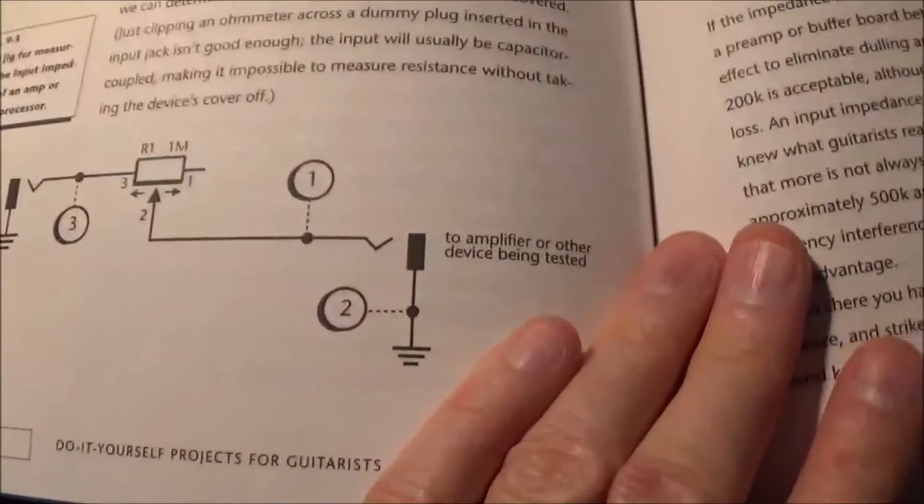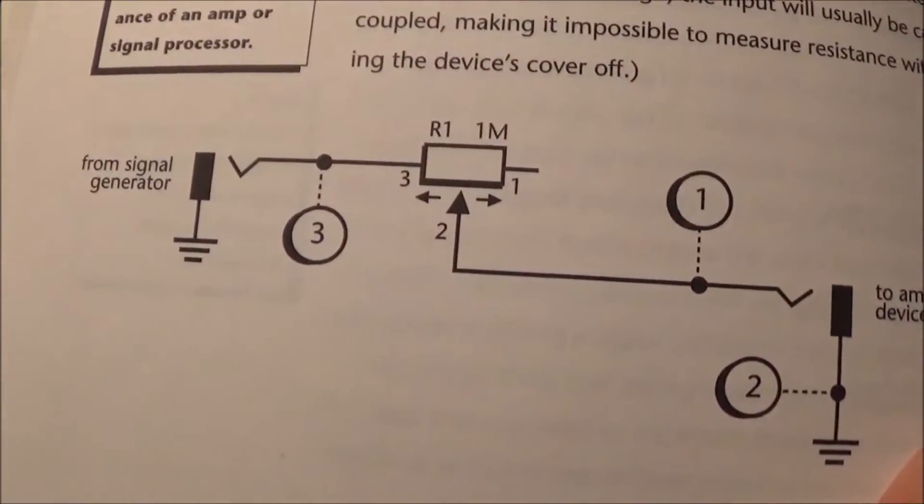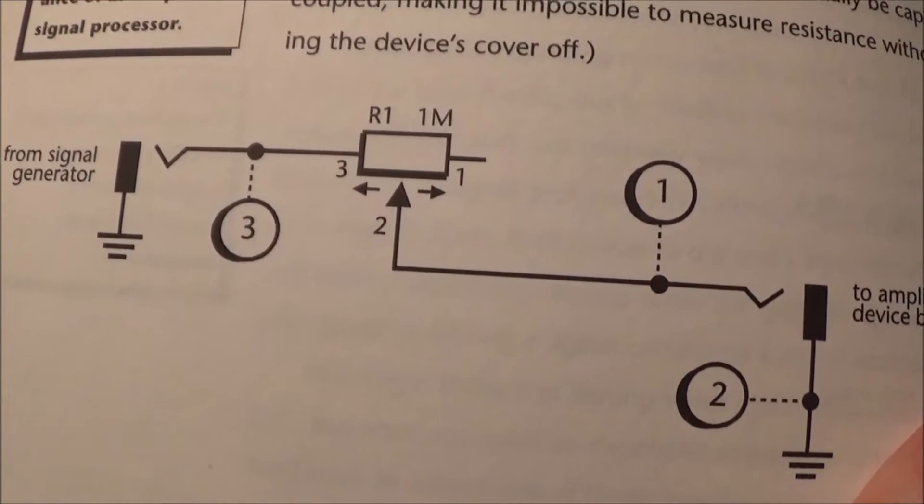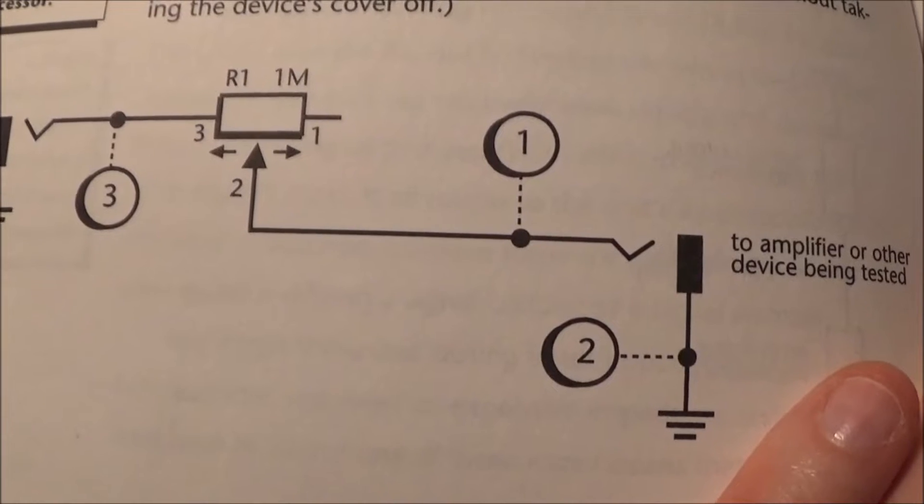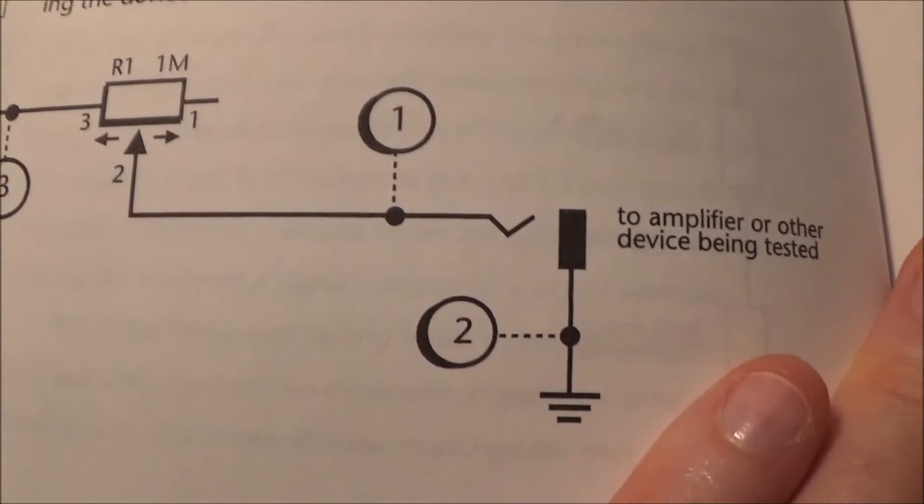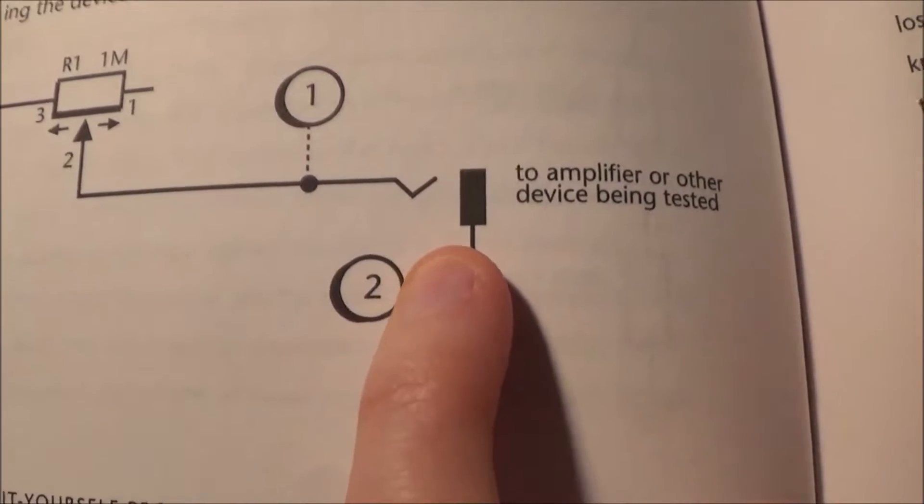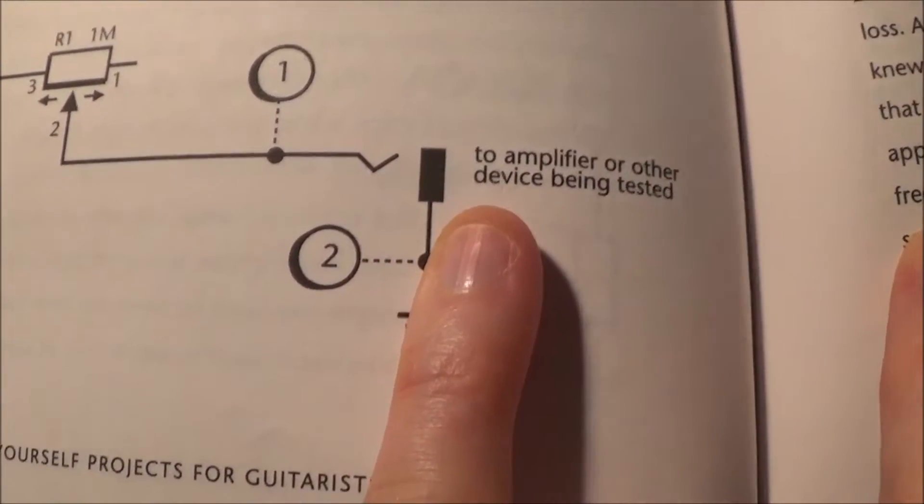You send a signal in to your box from a signal generator. You have these three test points and it goes through a one megaohm variable resistor, then you output this into the input of the device you're going to test.